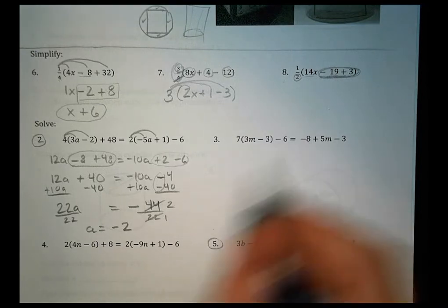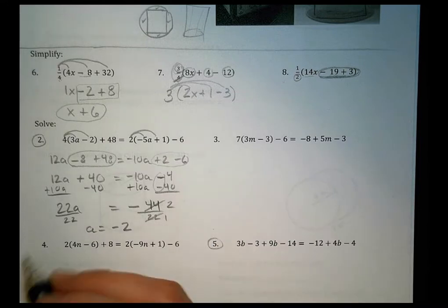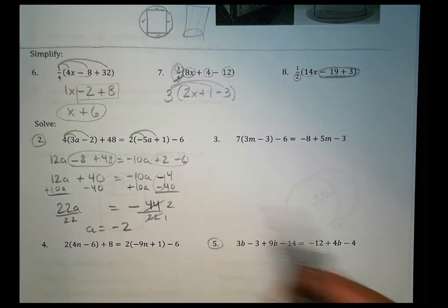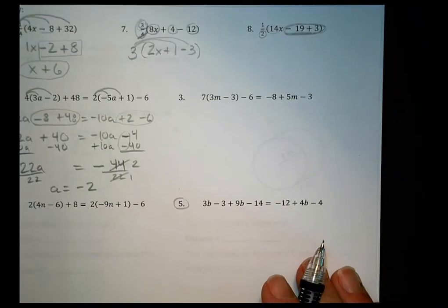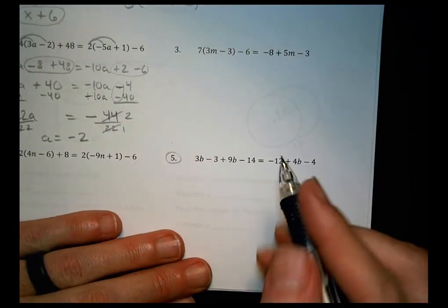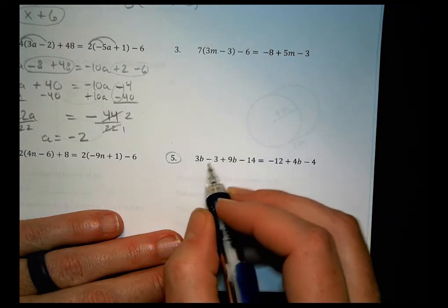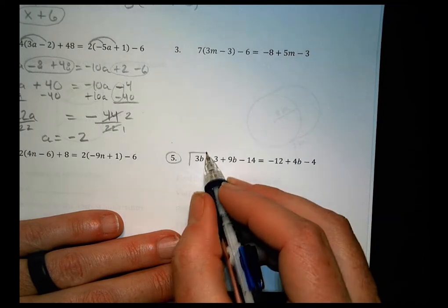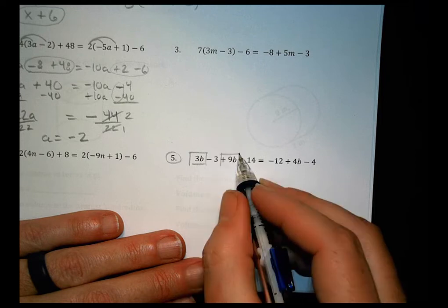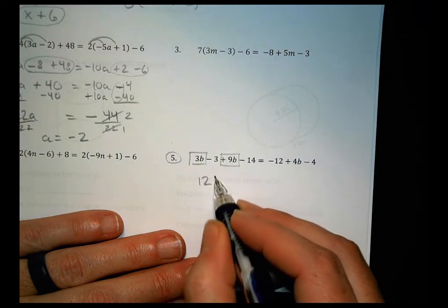Number 3 and 4 you can work those out, a lot of distributing there and combining like terms. Let me do 5 so you have one more in case you got stuck on something. All right, let's combine our like terms first. I got a 3b and a 9b right there, so that makes 12b.